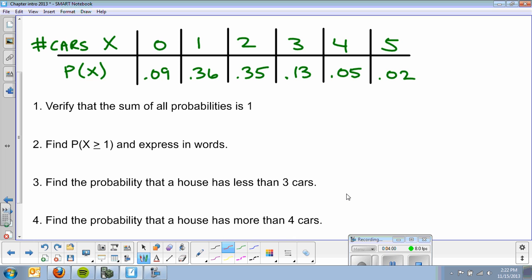Verify the sum of all probabilities is one. Okay. So, we're basically going to add 0.09 plus 0.36 plus 0.35 plus 0.13 plus 0.05 plus 0.02 and get one. So, that works out.